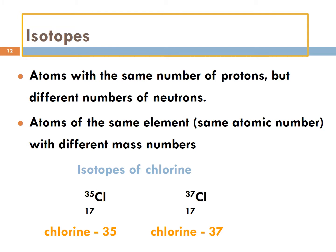Isotopes have the same number of protons but a different number of neutrons, and atoms of the same element will have different masses. For example, chlorine-35 has 35 total neutrons and protons, where chlorine-37 has two more neutrons to give you a mass of 37. The protons stay the same at 17 because it's chlorine, and the neutrons change based on their isotope.